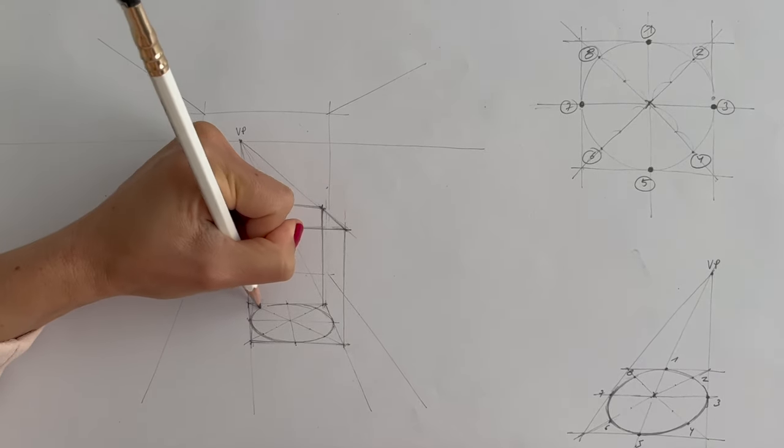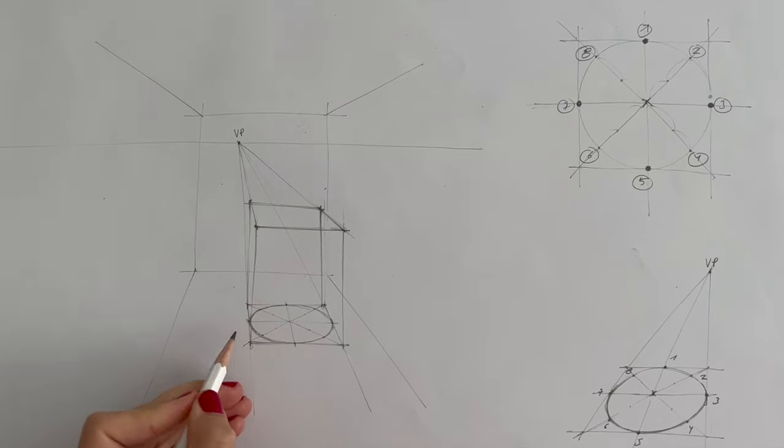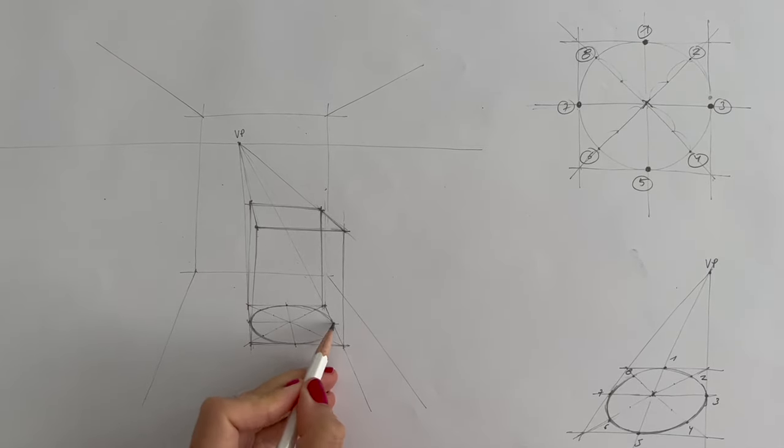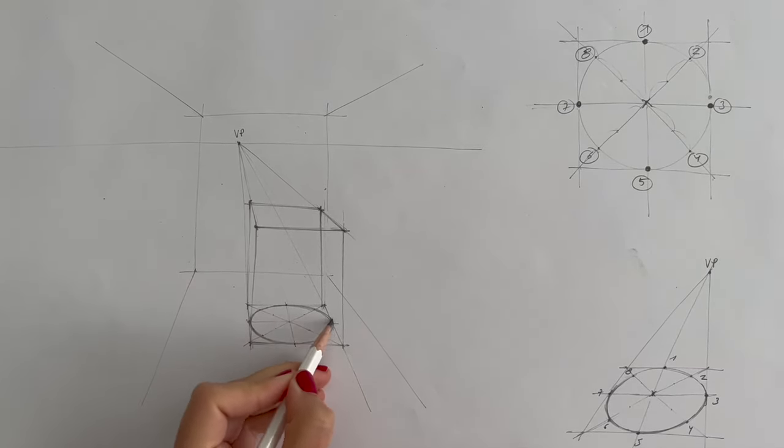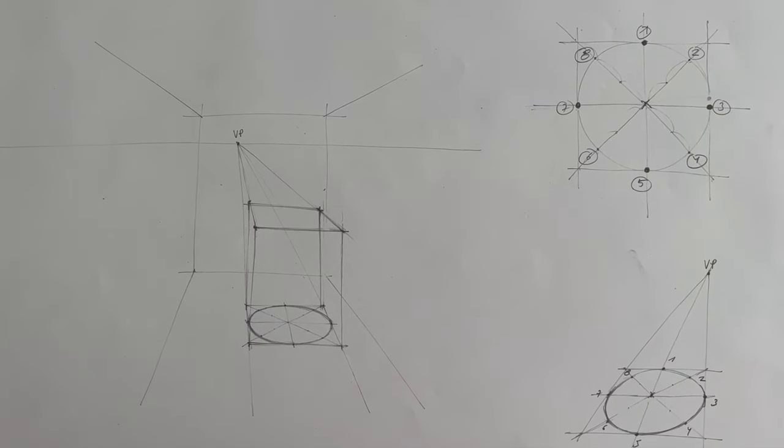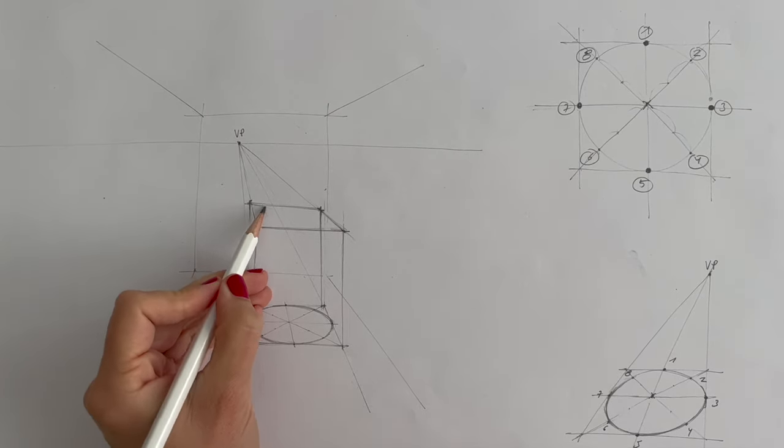And I started with the bottom ellipse because it's easier, a little bit easier to draw it. Why? Because it's opening a bit more, because it's further away from the horizon line. Now let's do the same thing.